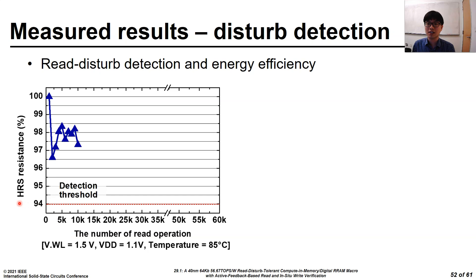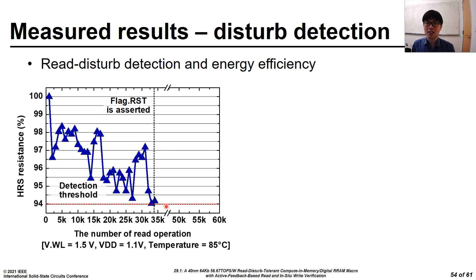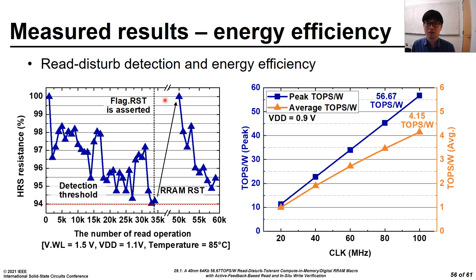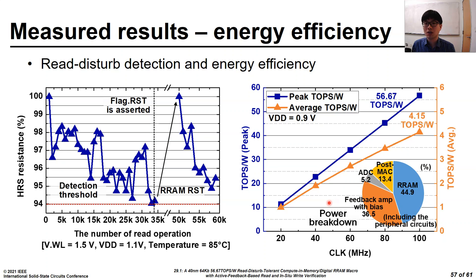This slide shows the measured results of the online read-disturb detector. The x-axis is the number of read operations, and the y-axis is the normalized HRS resistance. In this measurement, the extreme condition is used to accelerate the read disturb. The HRS resistance decreases over the read operations due to read disturb. Then, once the HRS resistance reaches the threshold of the read-disturb detector, the flag to reset the HRS cell is asserted. Finally, the HRS cell is reset to retain a high resistance. The online read-disturb detector successfully detects the decrease of HRS resistances without hindering CIM operations. The proposed RRAM macro achieves the peak energy efficiency of 56.67 TOPS/W. The average energy efficiency is 4.15 TOPS/W.